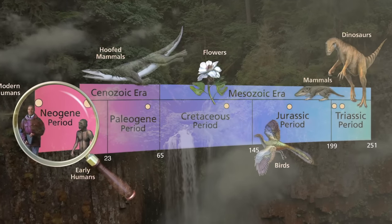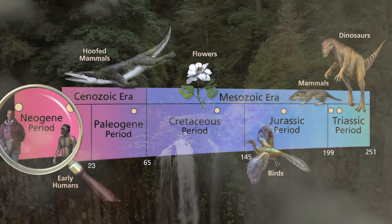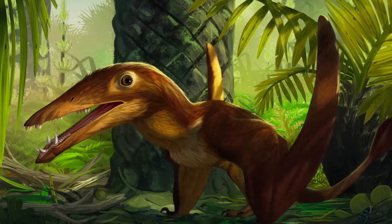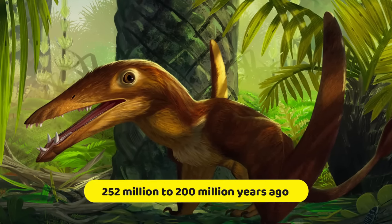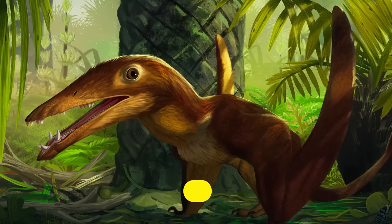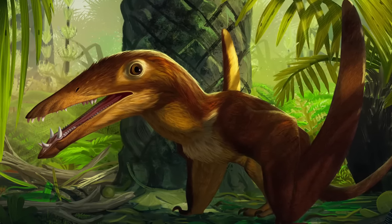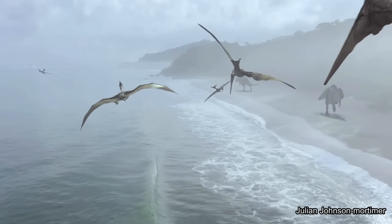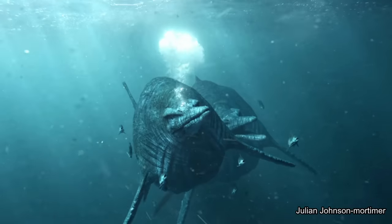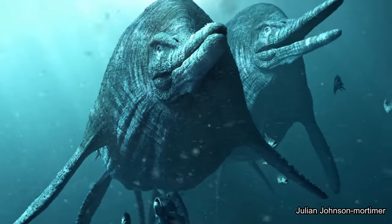It was divided into the Triassic, the Jurassic and the Cretaceous periods. The Triassic period, that spanned from 252 million to 200 million years ago, saw the rise of reptiles and the first dinosaurs. During this time, the first pterosaurs sailed through the skies and the first ichthyosaurs and plesiosaurs swam in the oceans.